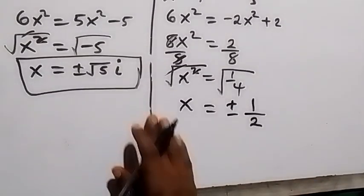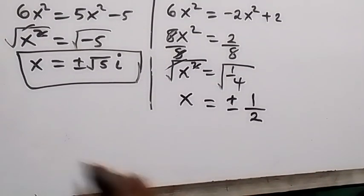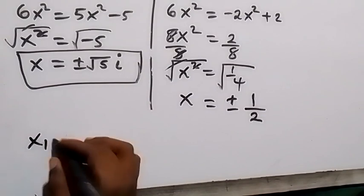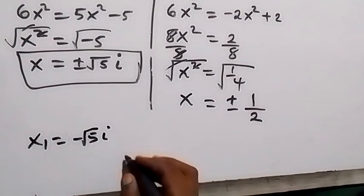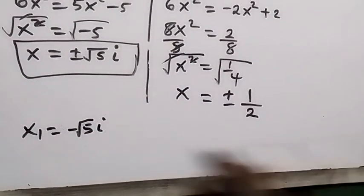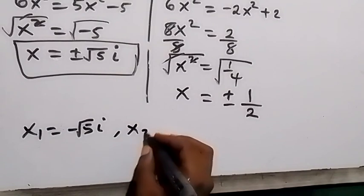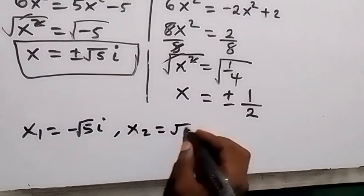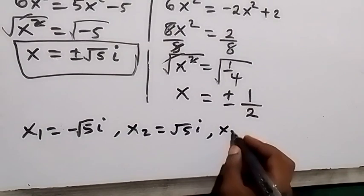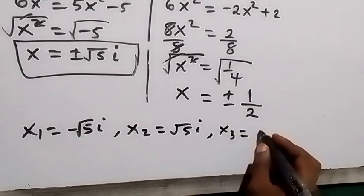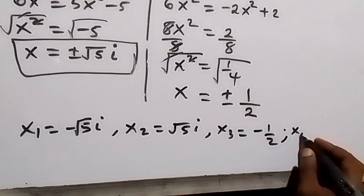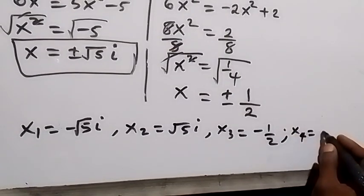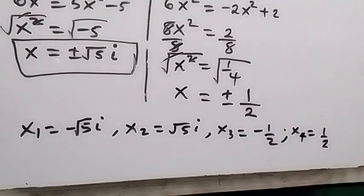So we now have four solutions: x₁ = -√5i, x₂ = √5i, x₃ = -1/2, and x₄ = +1/2. These are the possible values of x for this given problem.